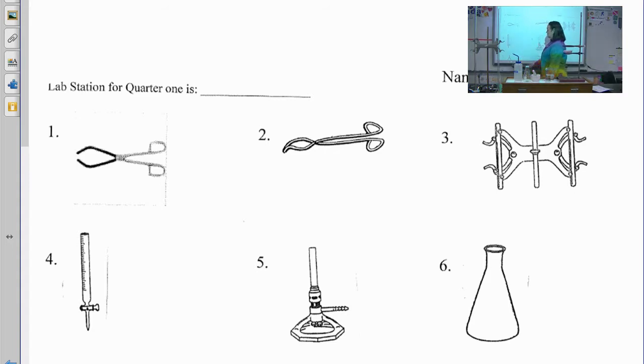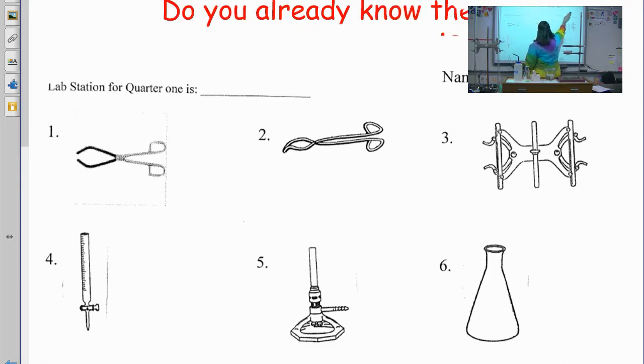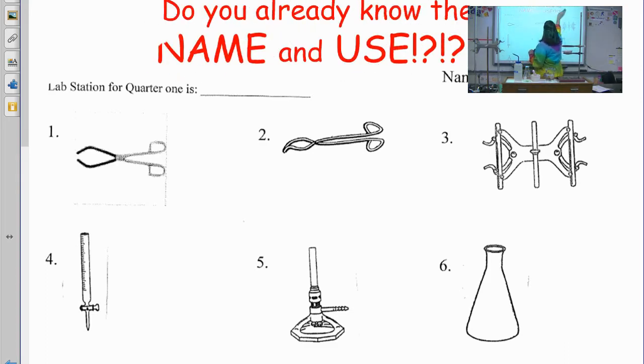So what we're going to do first and the way that I usually start this when we're in class is I want you to take a minute. And I want you to pause the program and I want you to look over the piece of paper. And I want you to see if you might surprise yourself. I want to see if you know the name and the use of any of these pieces of equipment already. So pause. It doesn't have to be very long. But go through and see if in your mind you can name and tell me what these are used for.